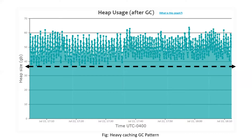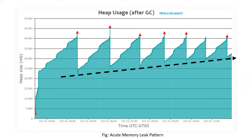Let me move on to the next pattern. I'm calling this the acute memory leak pattern. You can see the heap usage is climbing as new requests come in and objects are created. Now a full GC event runs, and the memory drops — but not all the way to the bottom. It drops somewhere here. And then once again, traffic keeps coming, memory keeps building up. When the next full GC runs, the memory drops again — but look at it.